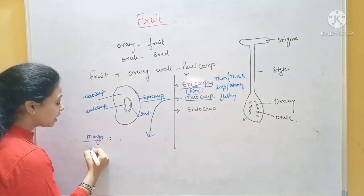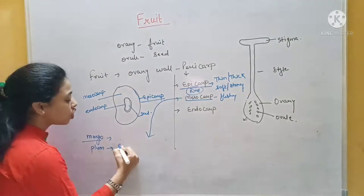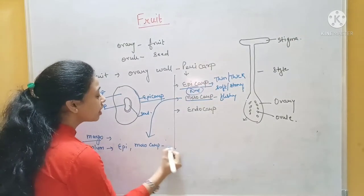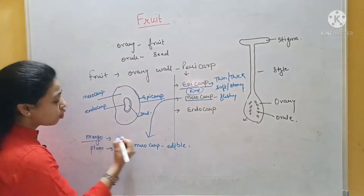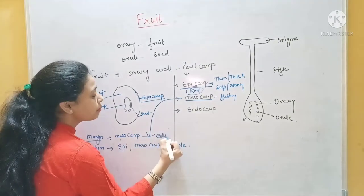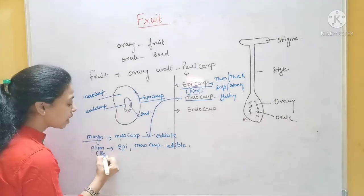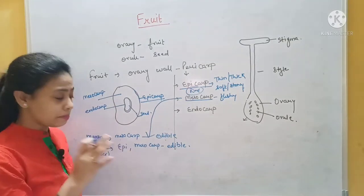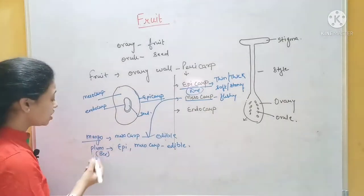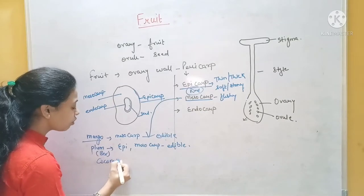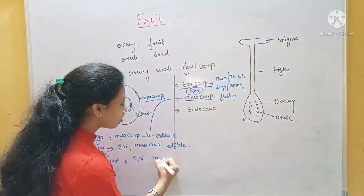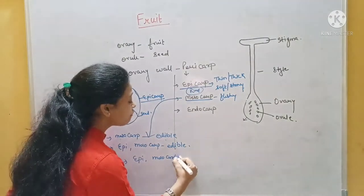If we talk about the plum — in plum, both the epicarp and the mesocarp are edible. In mango, only the mesocarp is edible. In plum, which in Hindi we call 'ber,' you will see that the epicarp and mesocarp are both edible. And if we talk about the coconut, the epicarp is hard, but the mesocarp is fibrous, and the endocarp is very hard.